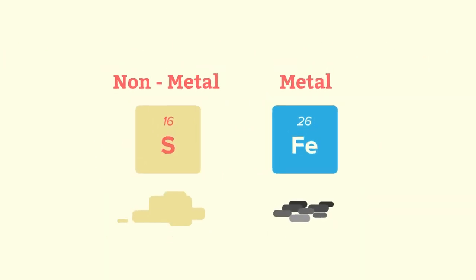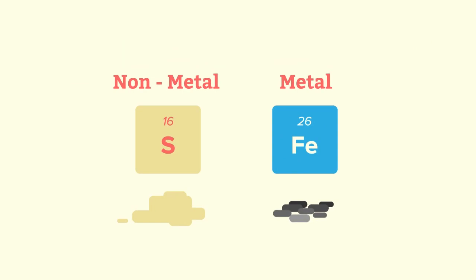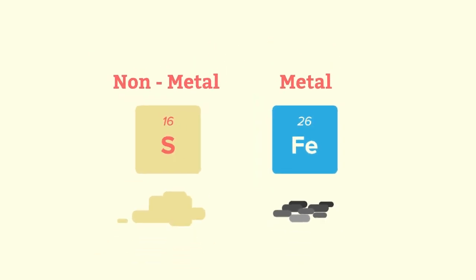So from these four tests, it can be seen that iron and sulfur are two completely different elements and behave differently in the four tests. Iron is a metal element. Sulfur is a non-metal element.